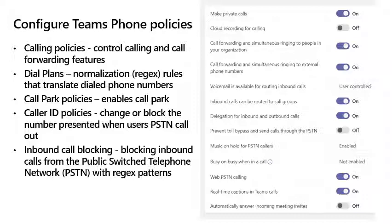Call Park policies give the end user the ability to park a call and then retrieve it from a different location in the building. Caller ID policies give you the ability to change or block the number that is presented when a user calls an external PSTN number.